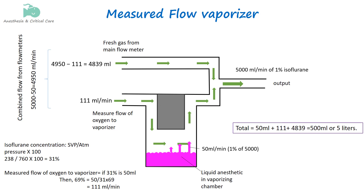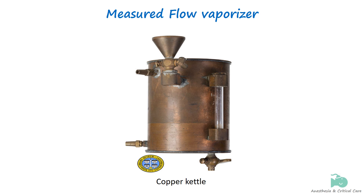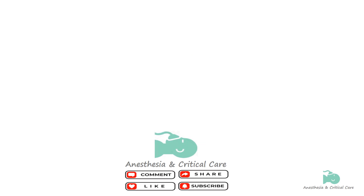This calculation is quite complex, and adjusting the flow rates of two flowmeters to precisely achieve the required anesthetic concentration is challenging at best. As a result, this method of regulating vapor output has become obsolete. The copper kettle vaporizer, introduced in the early 1950s, used the measured flow method to regulate vaporizer output.